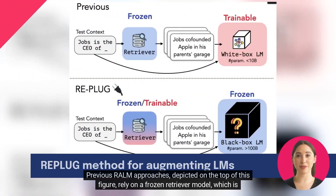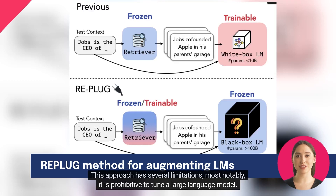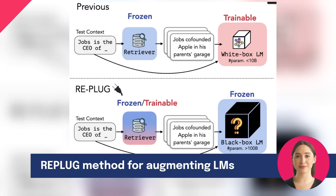Previous RALM approaches, depicted on the top of this figure, rely on a frozen retriever model, which is used to tune a trainable language model. This approach has several limitations — most notably, it is prohibitive to tune a large language model.